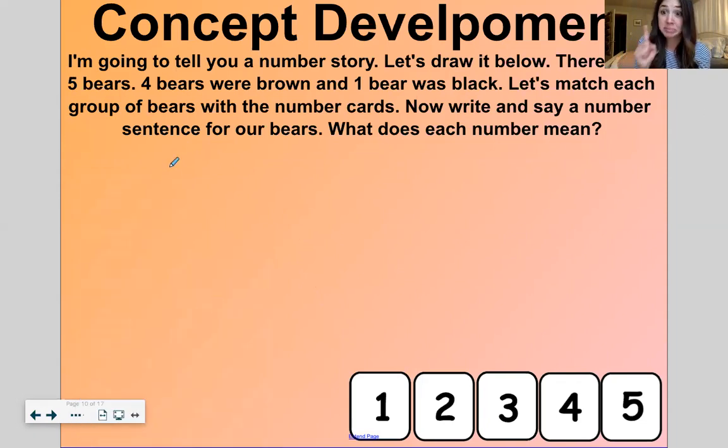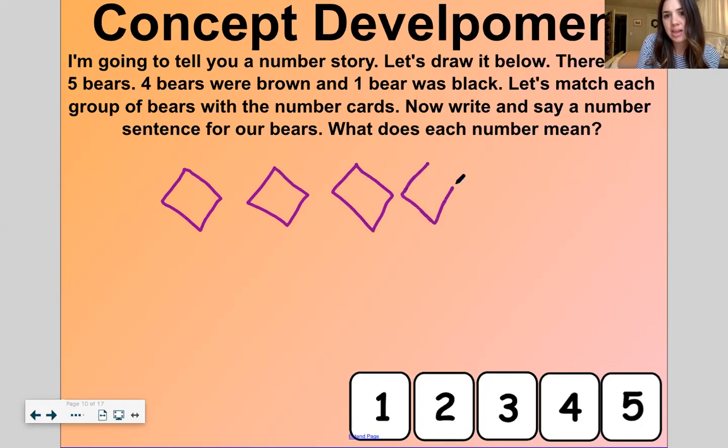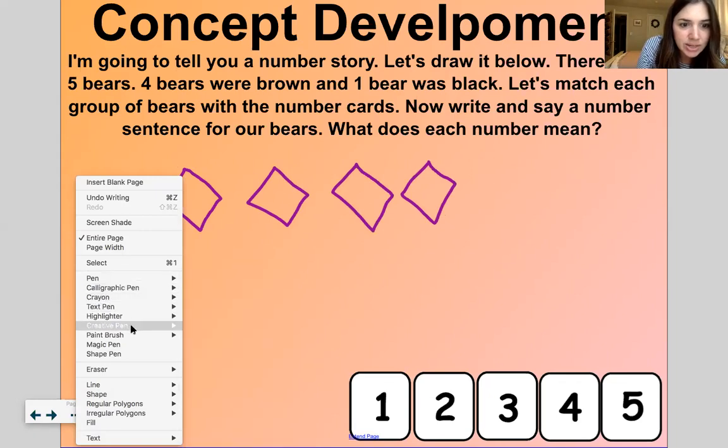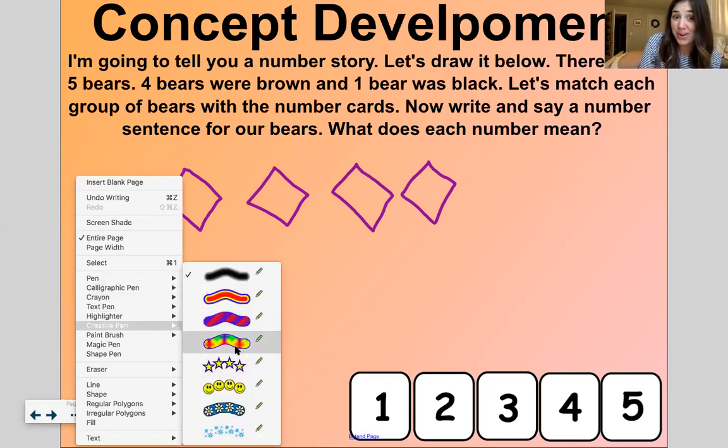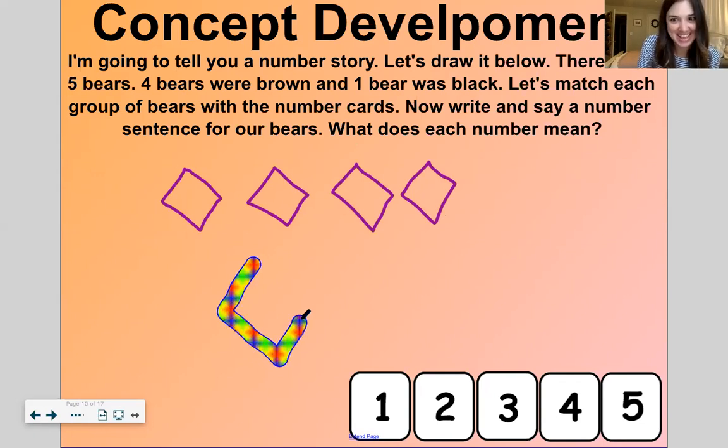Some people might call these a diamond, but they're actually a rhombus because a diamond is a 3D shape. So if I have five rhombuses, I'm going to draw four, this purple color. And one, what color should I use? Oh, I'm going to make one rainbow. That's a cool one, right? I like that one. So I have four rhombuses, or I have five rhombuses.